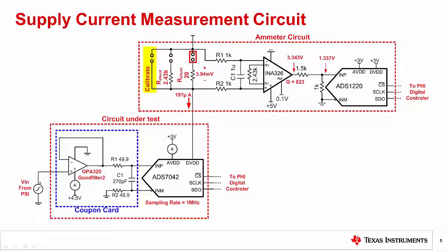Also notice that the calibration position shorts out the INA input to allow measurement of the system offset. In the example shown, the digital supply current of 197 µA flows through a 20 Ω shunt resistor to develop a 3.94 mV input voltage. The INA gain of 823 increases this to 3.343 V. The attenuator then scales this according to the ADS-1220 input requirements. The ADS-1220 delta-sigma converter was used as it naturally averages the input signal. Also, the filter at the input of the INA averages out transients in the current measurement. Keep in mind that the ADC conversion current is not a constant value, but rather a series of transient currents that is averaged.